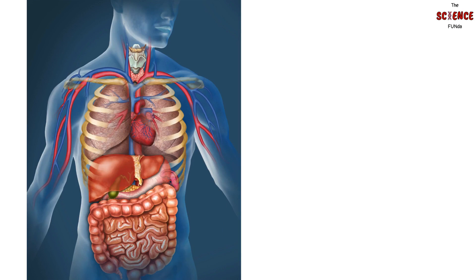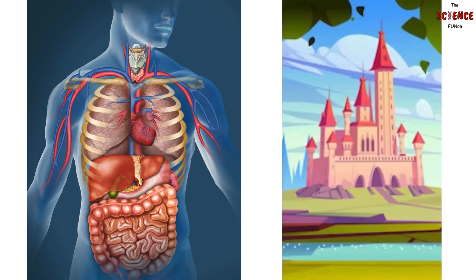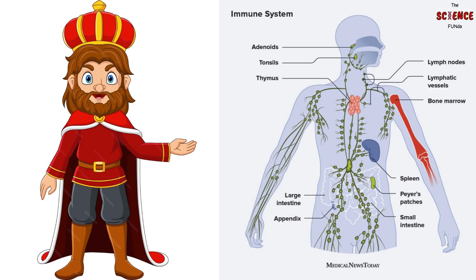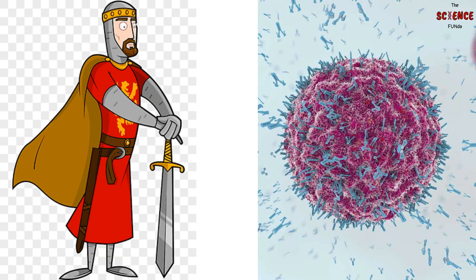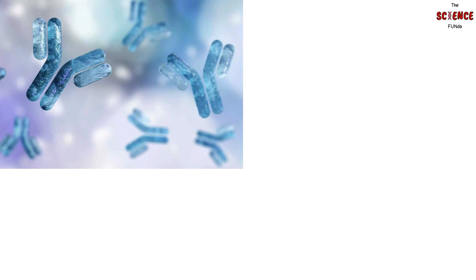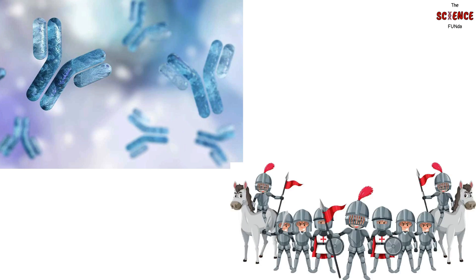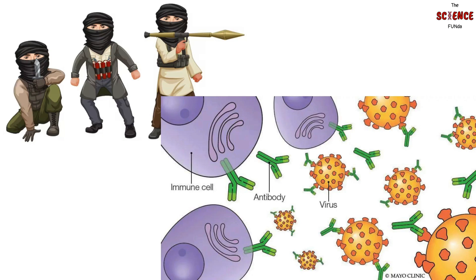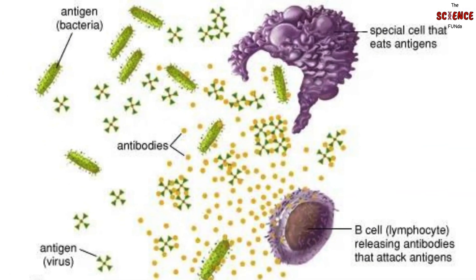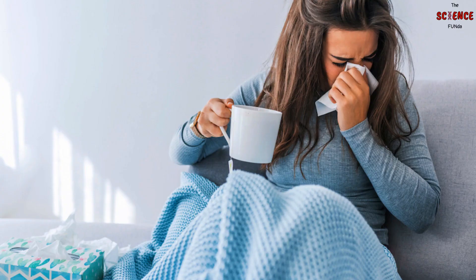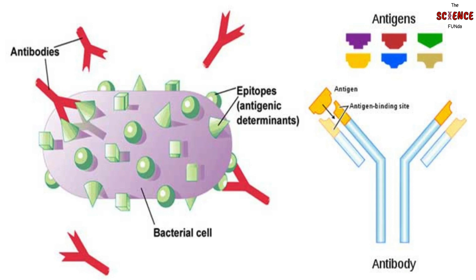The same thing happens in our body. The kingdom is our body. The king is none other than our immune system, who orders his chief army commander — the B cell — who produces antibodies. Antibodies are the soldiers of our body who fight with these invaders, which are antigens, just like unwanted guests trying to enter a castle without permission. Antigens are foreign substances like viruses, bacteria, or allergens that enter our body without permission. They can cause trouble and make us sick. In today's video, we shall learn about these sneaky invaders called antigens in detail.